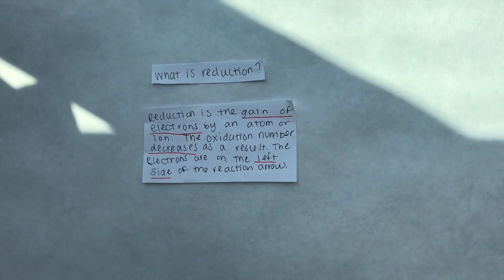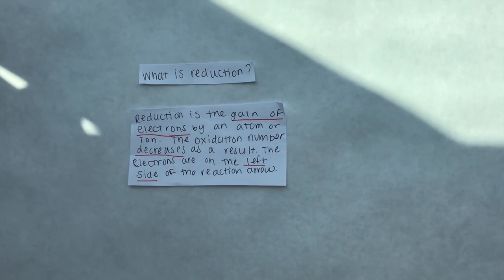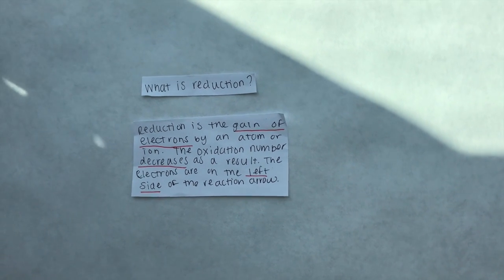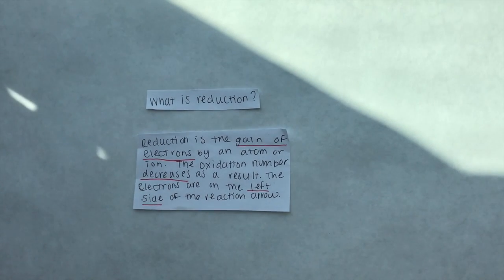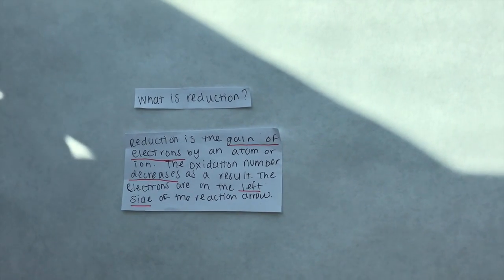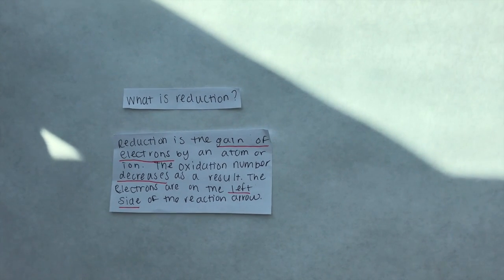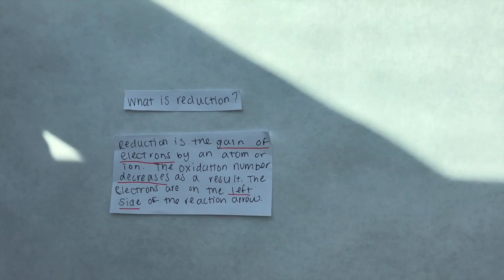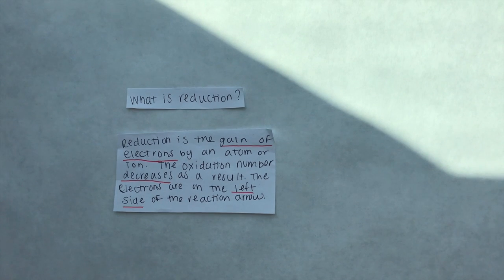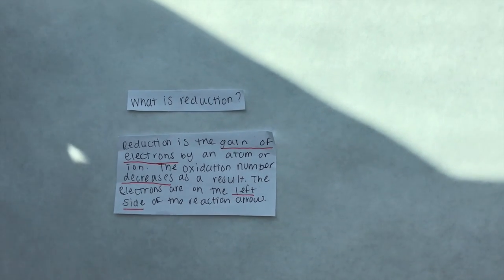Redox reactions are comprised of reduction and oxidation sequences. Reduction is the gain of electrons by an atom or ion. The oxidation number decreases or is reduced as a result. In half reactions, these electrons are found on the left side of the reaction arrow.